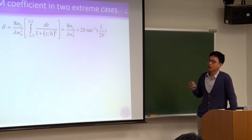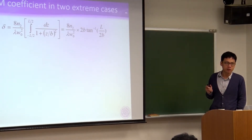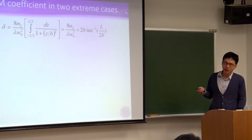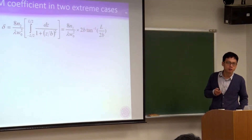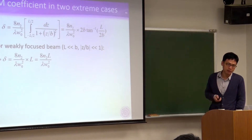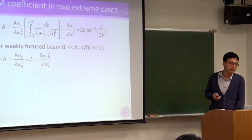We are interested in two extreme cases — just as in the analysis of saturable absorbers, where we don't have a general analytic formula but can derive formulas for fast and slow cases. Let's check the two extreme cases. In the first case, we consider a weakly focused beam, meaning crystal thickness L is much shorter than the confocal diameter B.